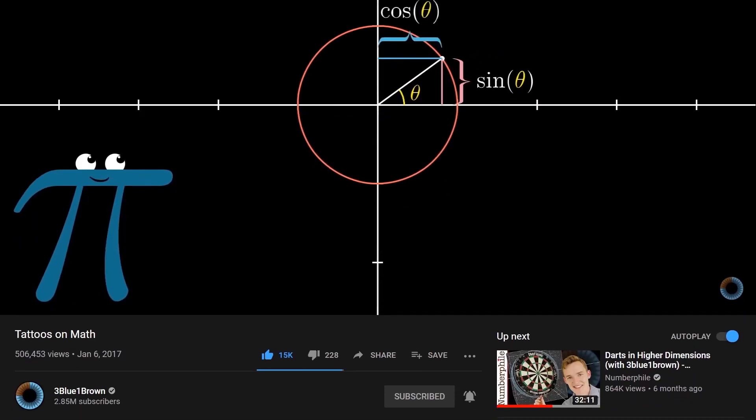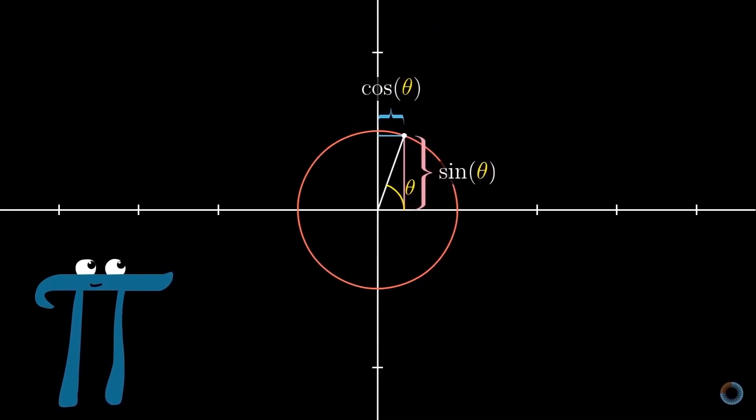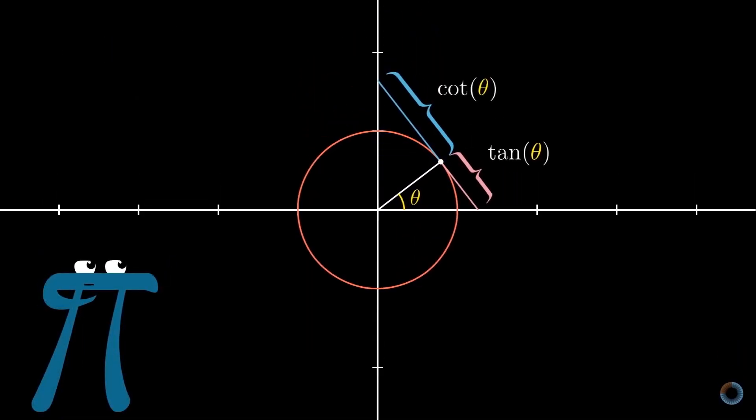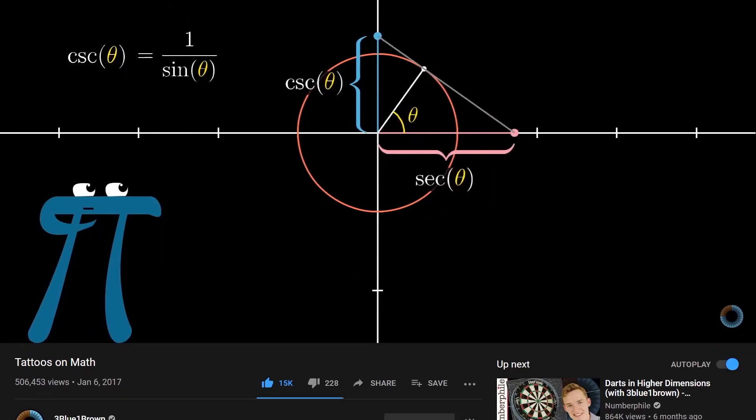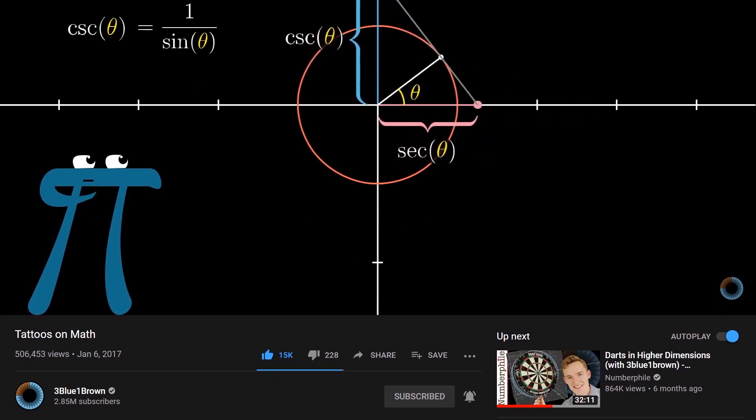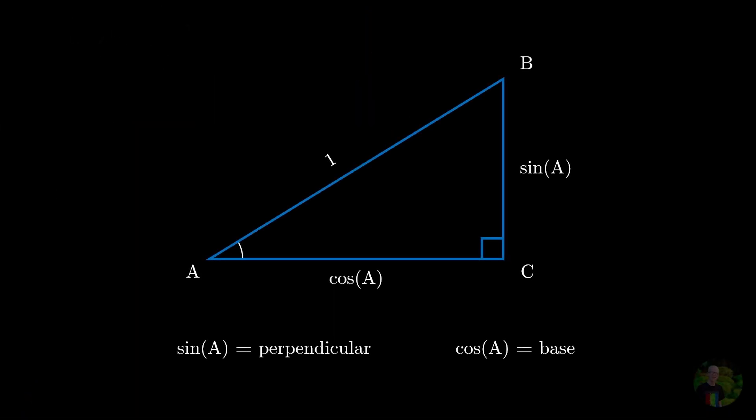there's actually a very nice way of visualizing the trigonometric functions with the help of a unit circle, a circle with the radius 1. Again, 3Blue1Brown has already made a great video about it, which is linked below in the description. And coming back to our triangle, if we use the Pythagoras theorem here, we get that sine squared A plus cos squared A is equal to 1. Pretty neat, right?